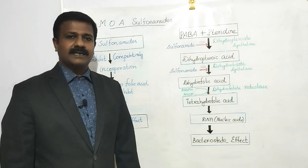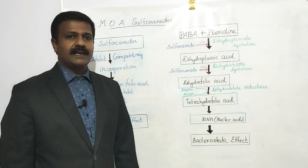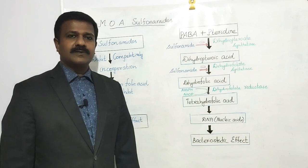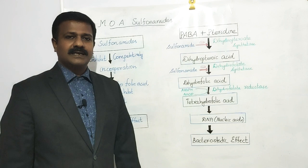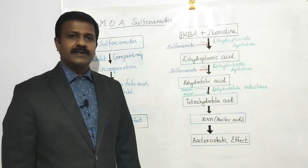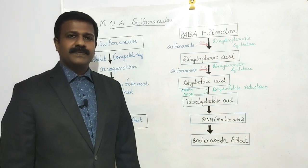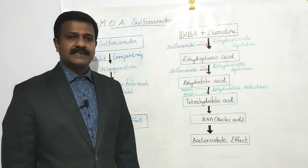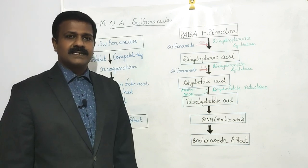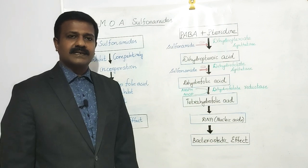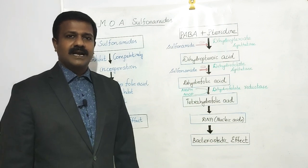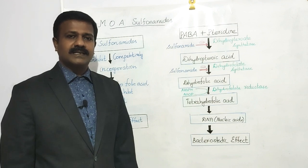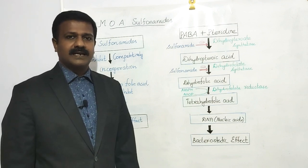Sulfonamides, or sulfa drugs, are a group of antibiotics that are used to treat bacterial infections. These sulfonamides are mainly used to treat bacterial infections like urinary tract infections, respiratory tract infections, ear infections, and eye infections.